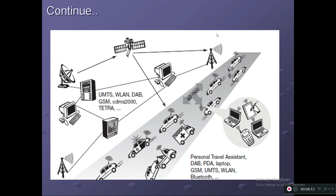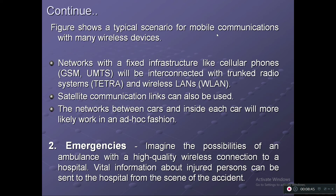You can also see the figure showing different types of wireless communication — a satellite, a base station, an antenna, a desktop, and a moving vehicle using ad hoc communication. There is also a mobile phone, a laptop, and a touchpad — all systems accessing wireless communication only. The figure shows a typical scenario for mobile communication with many wireless devices.